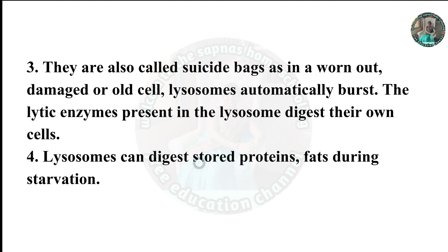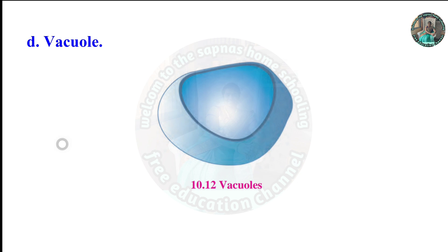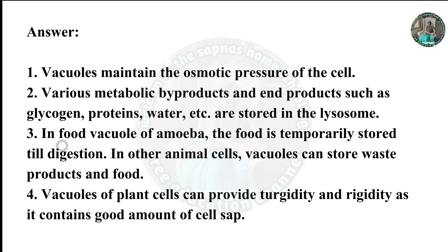Lysosomes can also digest stored proteins and fats during starvation. Part D: Vacuoles. Looking at the diagram of vacuoles. Answer: Vacuoles maintain the osmotic pressure of the cell. Various metabolic byproducts such as glycogen, proteins, and water are stored in vacuoles. In food vacuoles of Amoeba, food is temporarily stored till digestion. In other animal cells, vacuoles can store waste products. Food vacuoles of plant cells can provide fragility and rigidity as they contain a good amount of cell sap.